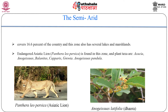The semi-arid zone covers 16.6 percent of the country. Although overall semi-arid, this zone also has several lakes and marshlands. The grasses and palatable shrub layer support the highest wildlife biomass. Many plant taxa have African affinities, like Acacia, Balanites, and Capparis. Forest community occurs only in this zone on gentler slopes of the Aravalli and associated hill ranges. The endangered Asiatic lion is also found in this zone in the Gir forest of Gujarat. The largest herbivores are blackbuck, chausingha, nilgai, and gazelle.